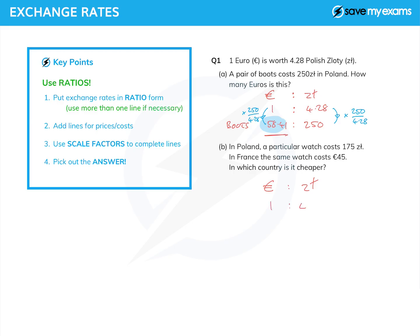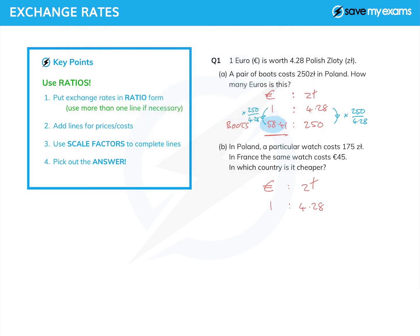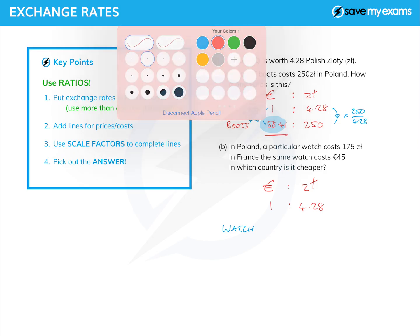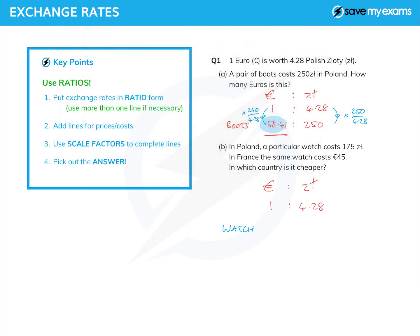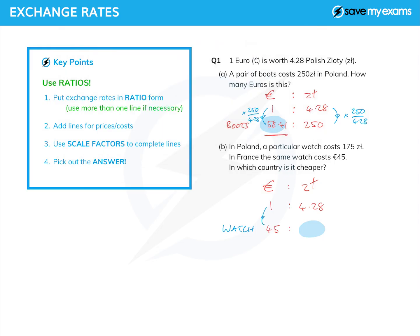Same exchange rate — writing it out again. And then let's look at the watch. The cost of the watch in euros is 45, so let's convert that into zloty. Why am I doing it that way around? Well, because the scale factor is easier this way around, because the scale factor from one to 45 is just 45.